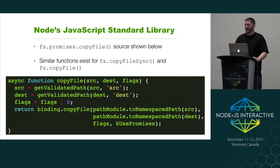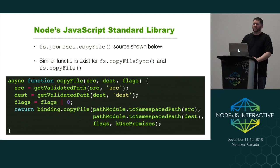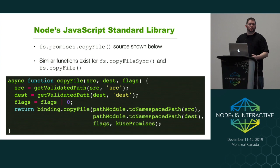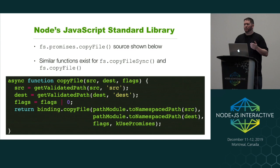The first thing that happens is we call into Node's fs module. I'm showing the promises-based version because it fits nicely on a slide. We pass in the source, the destination, and flags — for example, whether to overwrite if the file already exists. We validate both paths, make sure the flag is an integer using the OR 0 trick to convert to a signed 32-bit integer, and then we call binding.copyFile passing the normalized paths, flags, and a special symbol called kUsePromises that tells the binding layer we're doing a promises operation.